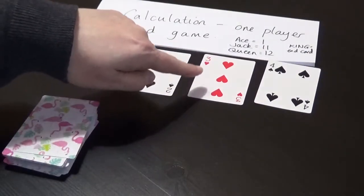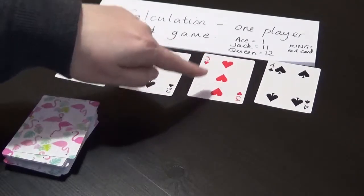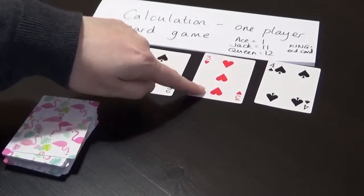The 3s, you're going to count up in 3. So 3, 6, 9. 12, remember, is Queen. That will end in the King.